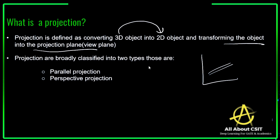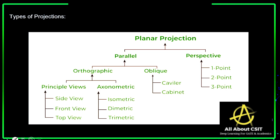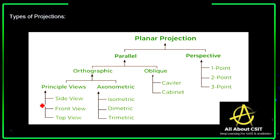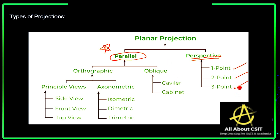Projections are broadly classified into two types: parallel projection and perspective projection. Looking at the diagram you can get complete clarity on the types of projection. Perspective projections are of one-point projection, two-point projection, and three-point projection.